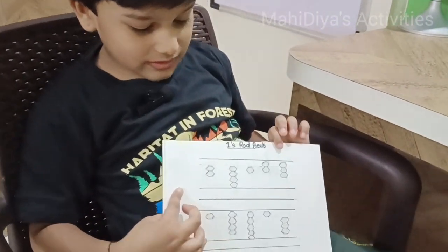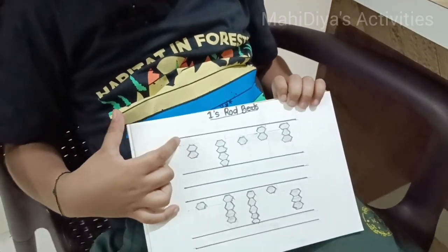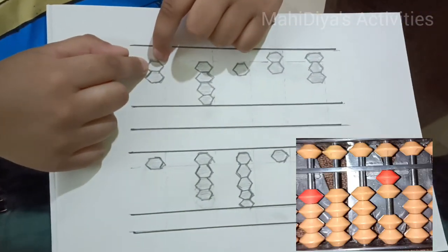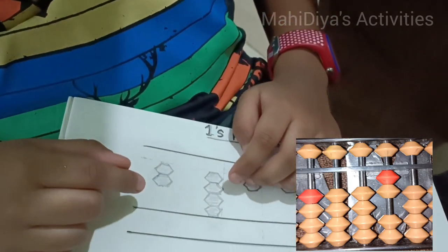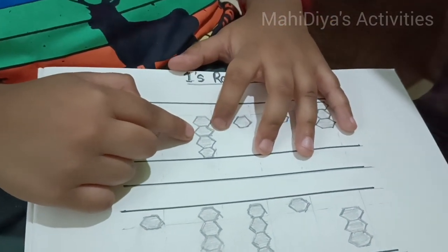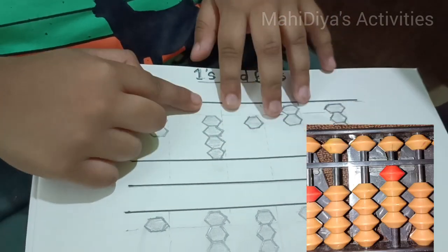See, this is 1 bead, 1 more bead, that's 2. Now here is 1 bead, 2 beads, 3 beads, 4 beads, it's 4.